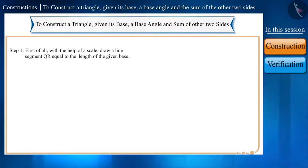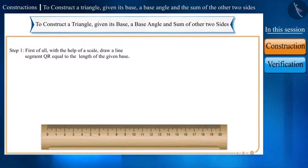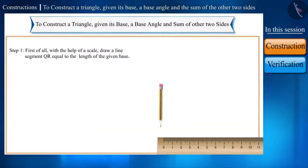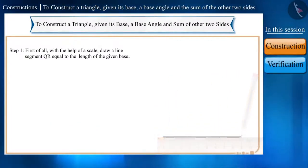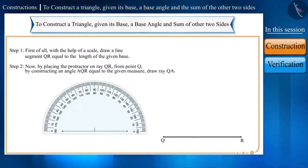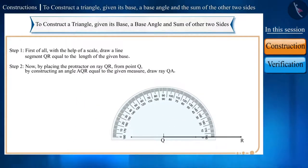Step 1. First of all, with the help of a scale, draw a line segment QR equal to the length of the given base. Step 2. Now, by placing the protractor on ray QR from point Q, by constructing an angle AQR equal to the given measure, draw ray QA.